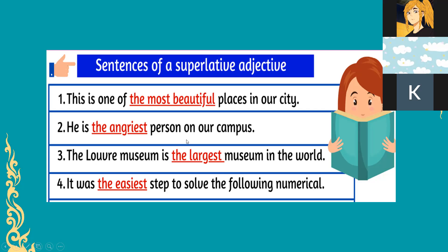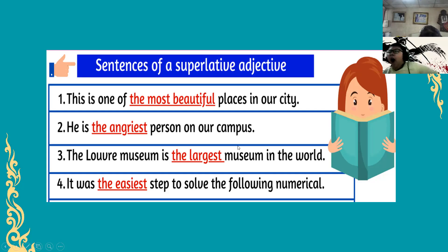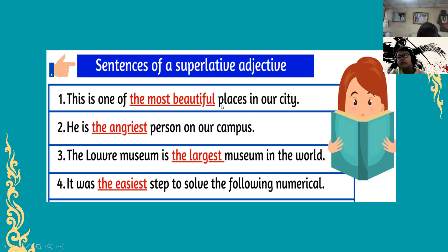What can you observe or what can you see in our examples of the superlative adjectives? It always has 'the'. If you see this one, you are referring to superlative adjective. And in the last lesson we had last week, comparative, you can see 'than' in the sentence. So in comparative there is 'than' in the sentence. In superlative, there is 'the' in the sentence.